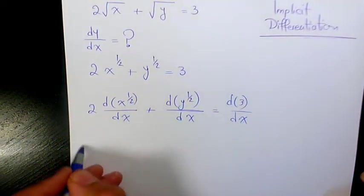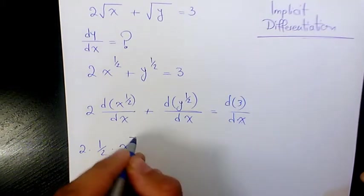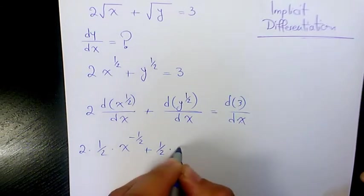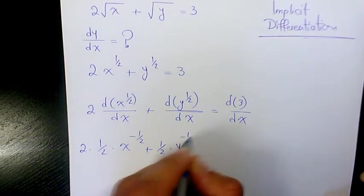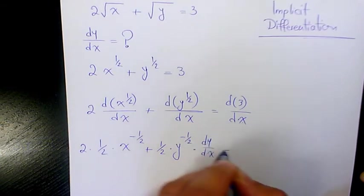So that's going to be 2 times 1/2 times x to the power of negative one-half, plus 1/2 times y to the power of negative one-half times dy/dx equals to the derivative of 3 with respect to x is zero.